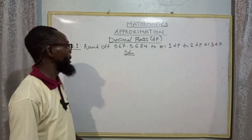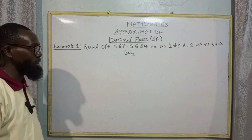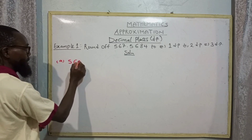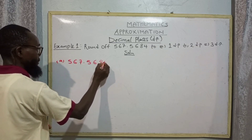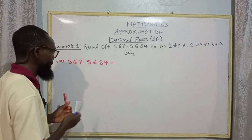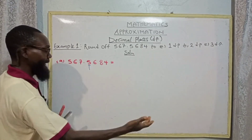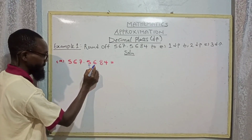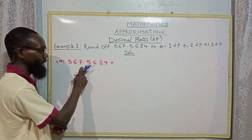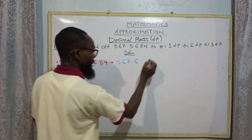Example one: round off 567.5684 to one decimal place. The first decimal place here is five. Now look at the digit to the right — we have six. Six is between five to nine, so you round up to one and add it to this five making six. So we are going to have 567.6. This is to one decimal place.